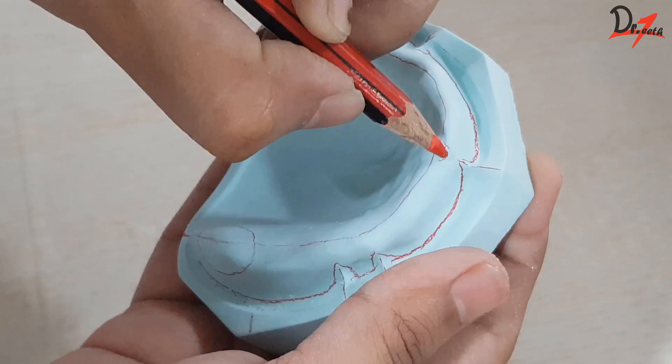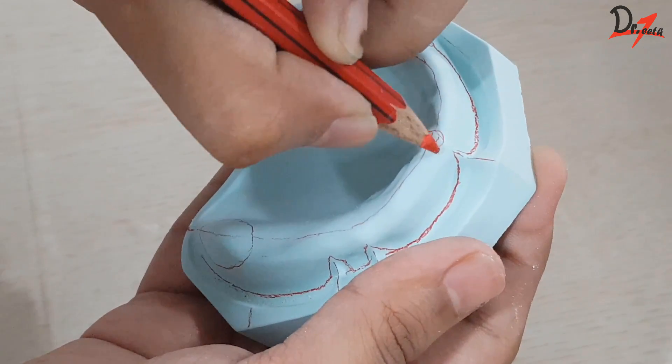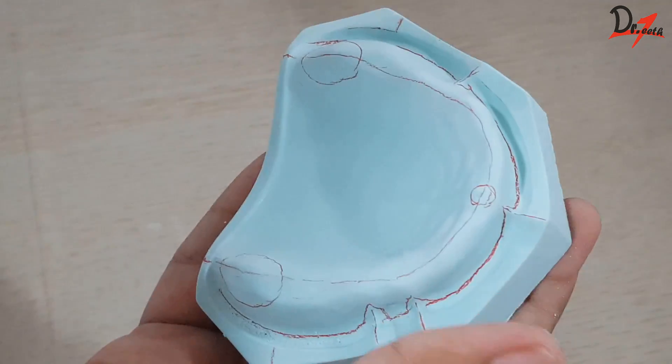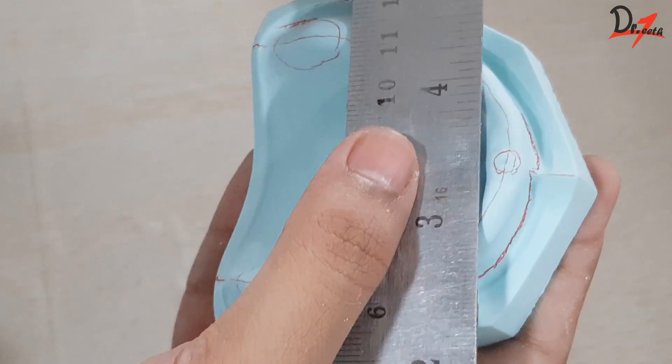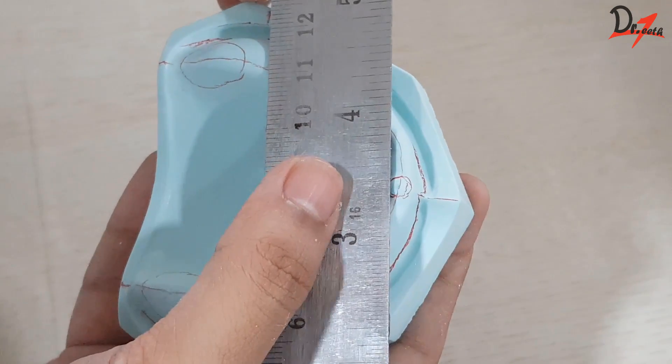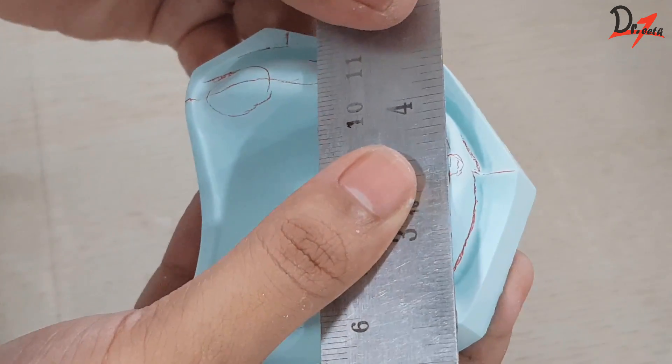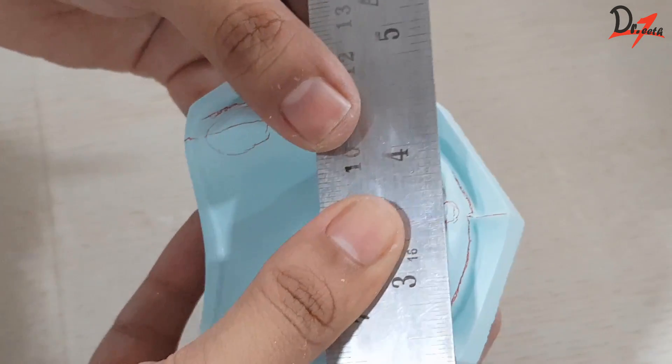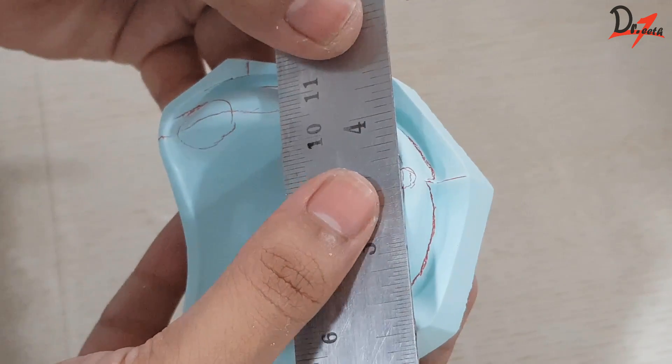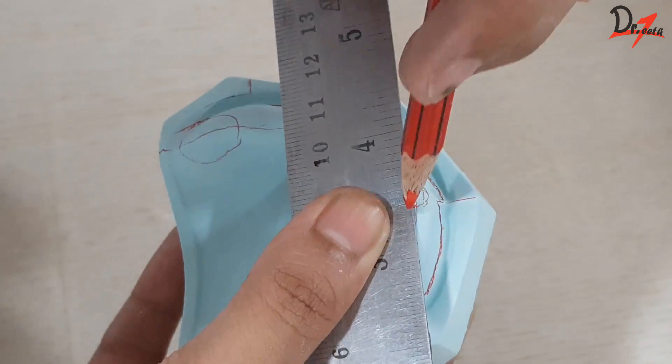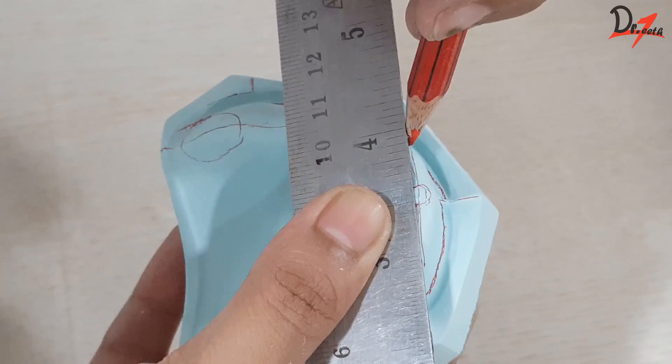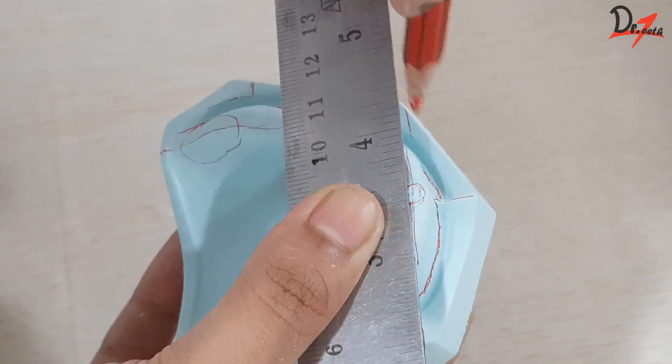Then we will mark the incisive papilla. And we will take a measuring scale and bisect this incisive papilla. Now when you bisect it, we will draw a line on the ridge and will extend it to the land area. When we bisect it from the center, the line will end at the end of the lateral incisor.